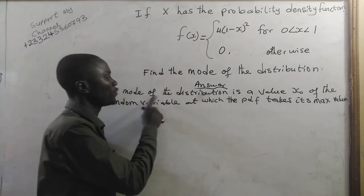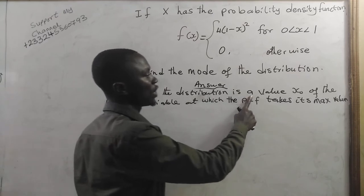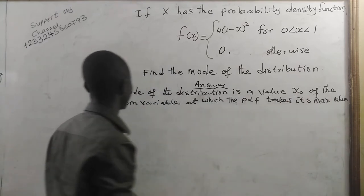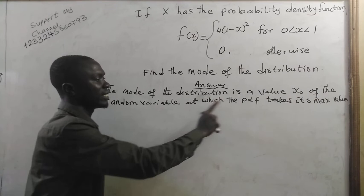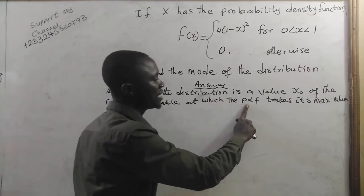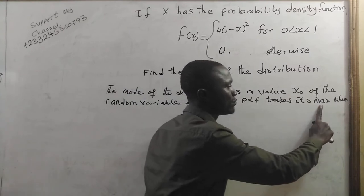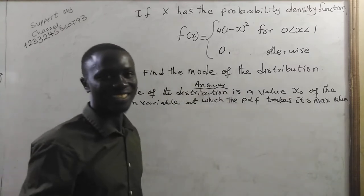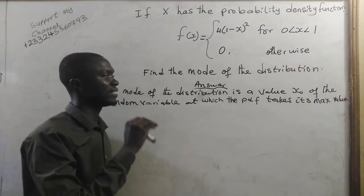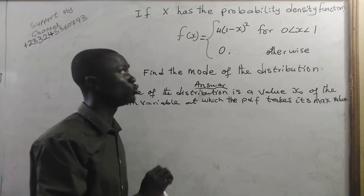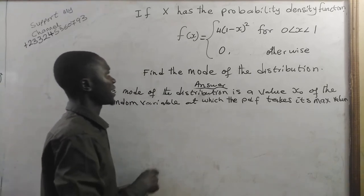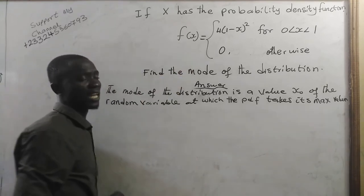Now, the mode of the distribution is a value x naught of the random variable at which the probability density function takes its maximum value. Now, to find the mode of the distribution, let us find the derivative of f(x).